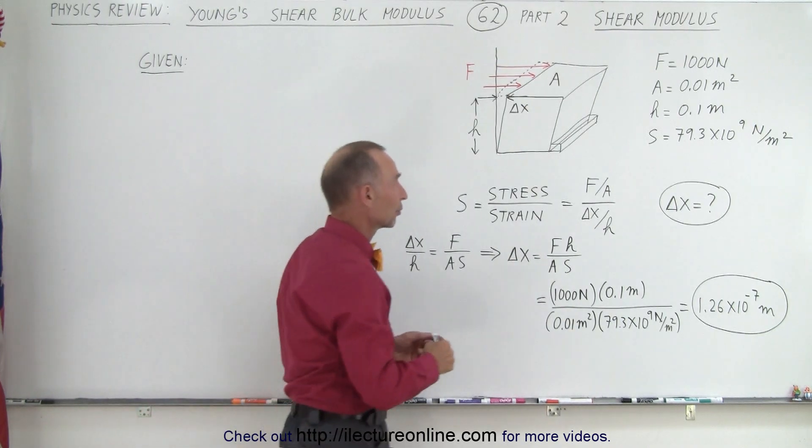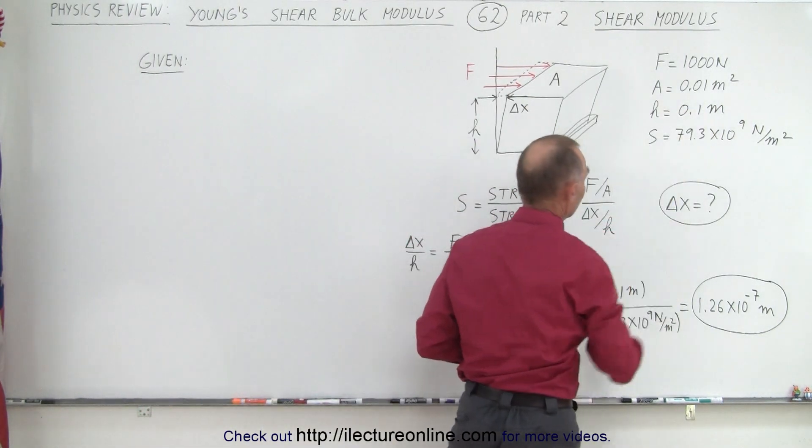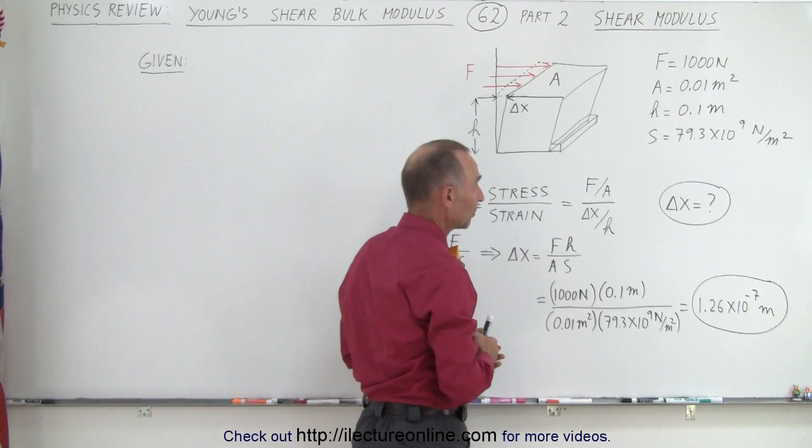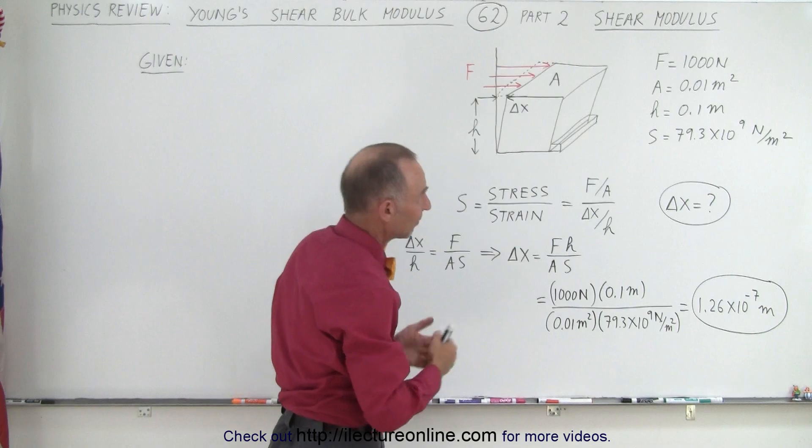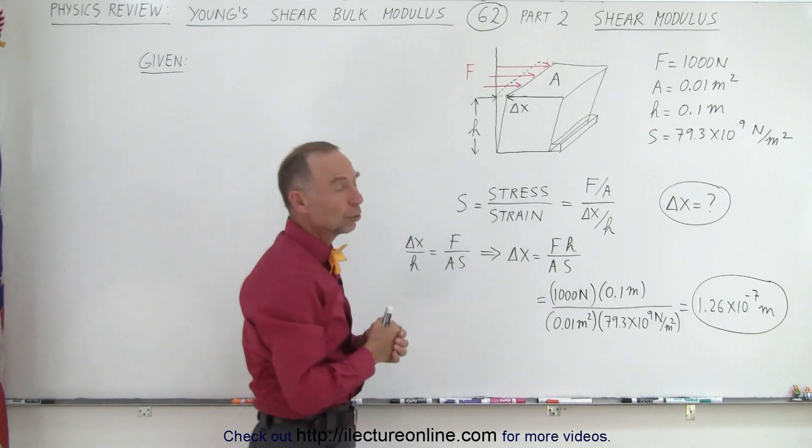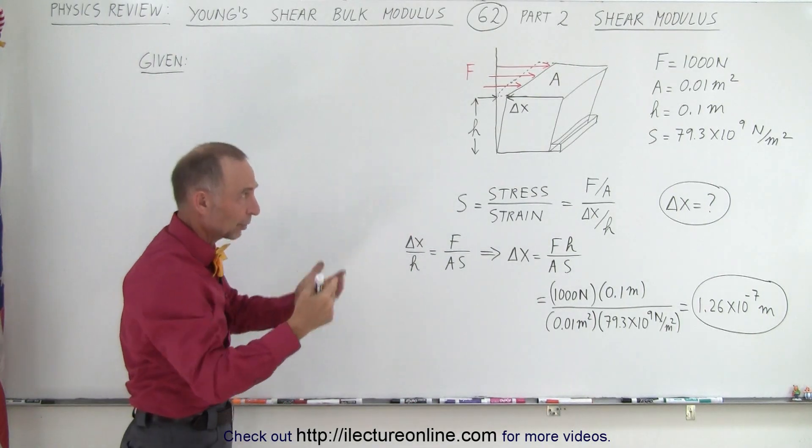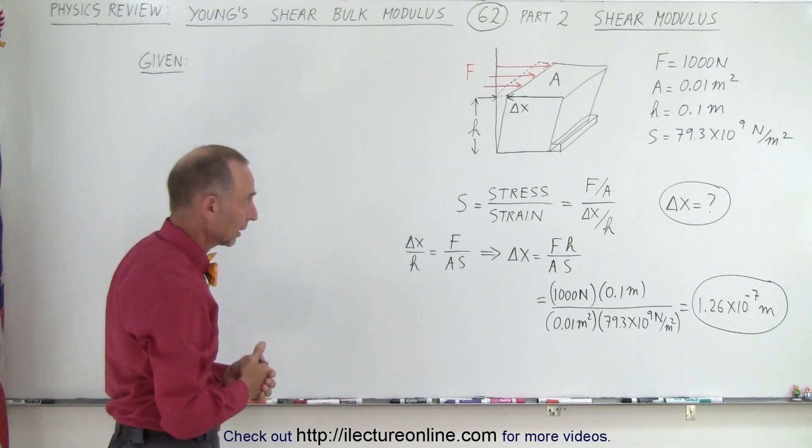So again we apply a force of a thousand newtons. Let's say the cross-sectional area is 0.01 square meters, the height is 0.1 meter, and the shear modulus is 79.3 times 10 to the 9 newtons per meter squared. That depends upon what the material is - you just go look it up in a table.